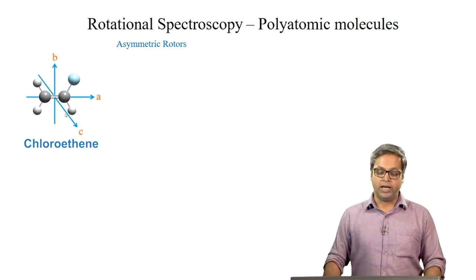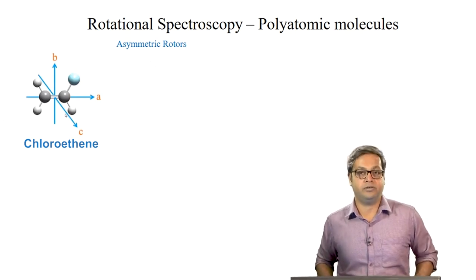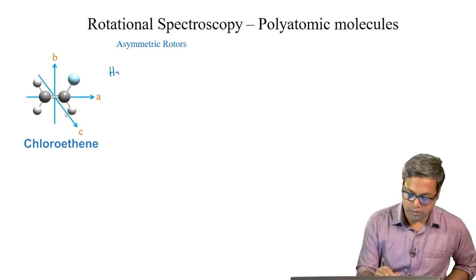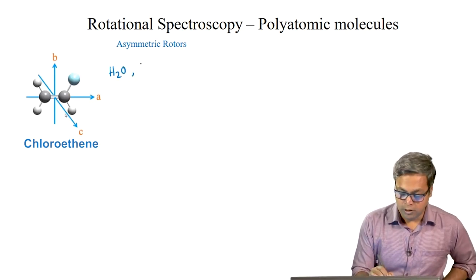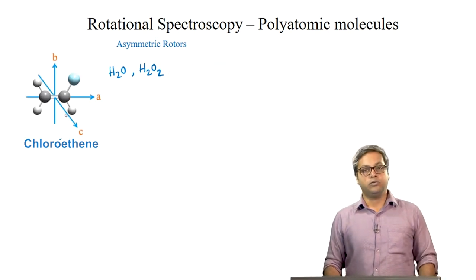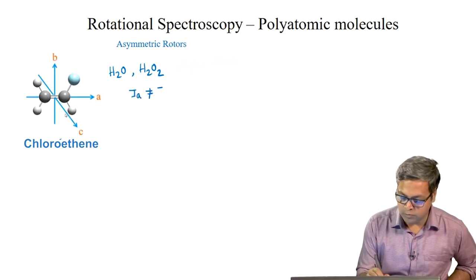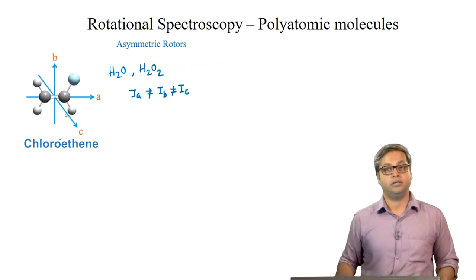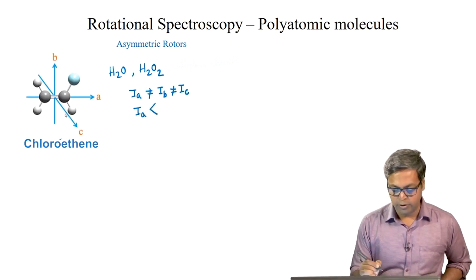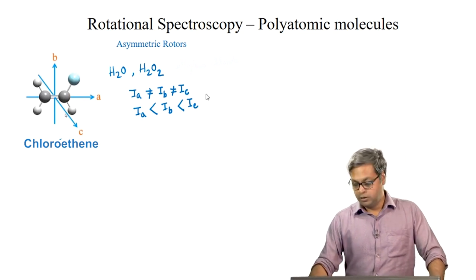The final category is the asymmetric top or asymmetric rotor. In fact, a vast majority of molecules are asymmetric. Examples of asymmetric tops are water (H2O) and hydrogen peroxide. For an asymmetric rotor, IA ≠ IB ≠ IC, and IA < IB < IC.